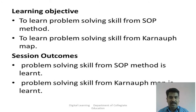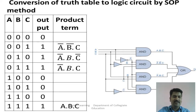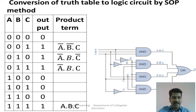Today we are going to learn about problem-solving skills by SOP method and also problem solving using Karnaugh map method. The first problem is the conversion of a truth table into a logical circuit using SOP method — SOP meaning Sum of Products method. There is a procedure: the first step is to identify the input variables for which the output is 1, identify those output ones, and write down the product term for those combinations.